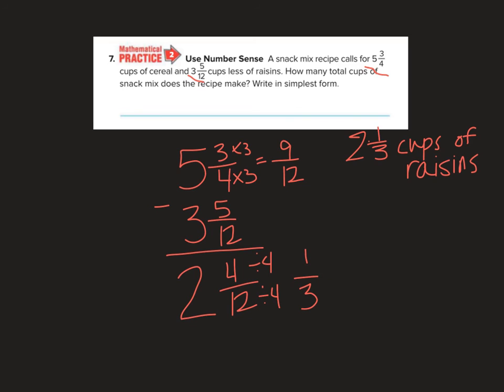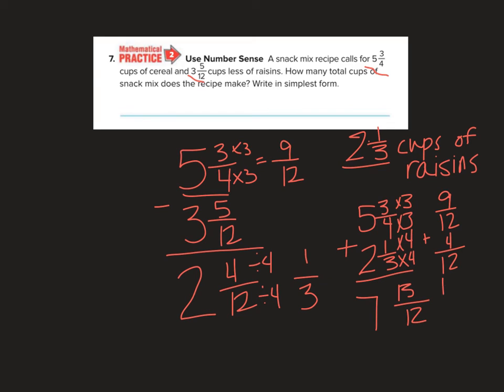Okay, so how many total cups of snack mix does it take? So I'm going to take raisins plus cereal. 5 and 3 fourths plus 2 and 1 third. Okay, I need to get, count down on our 12. Should have just kept it up there. I left it at 12. So I'm going to get 9 twelfths plus 4 twelfths. 9, 10, 11, 12, 13 twelfths. Great, improper fraction. Okay, so I'm going to break it up into 12 twelfths plus 1 twelfth, which would get plus 1 here. 8 and 1 twelfth cups of snack mix.